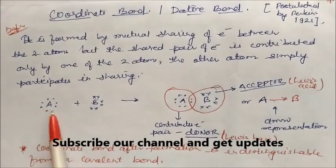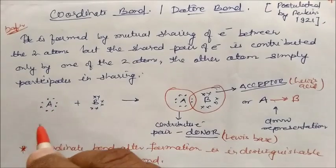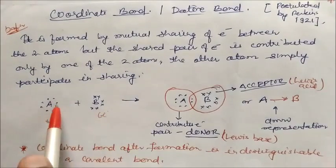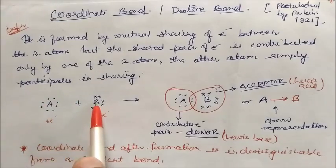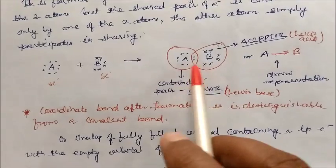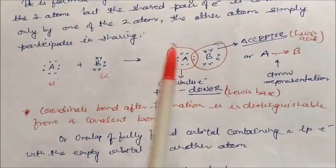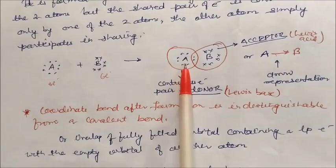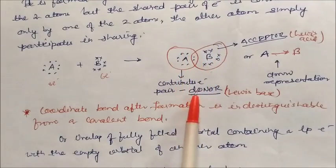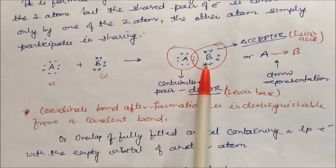Let us see this example. Atom A has eight electrons and atom B has six electrons. So electrons are given to complete the octet. They contribute a pair — this is not sharing as usual, this is not donating in the normal sense. When atom A is contributing an electron pair to B, A is called the donor, and when B is accepting this electron pair, B is called the acceptor.